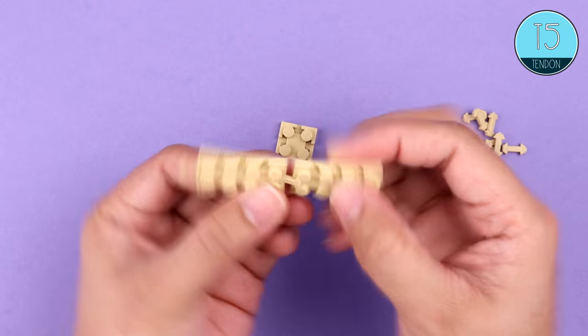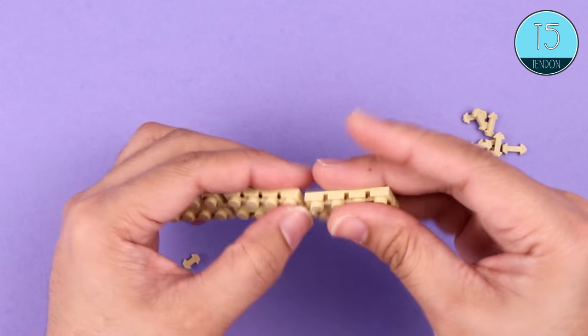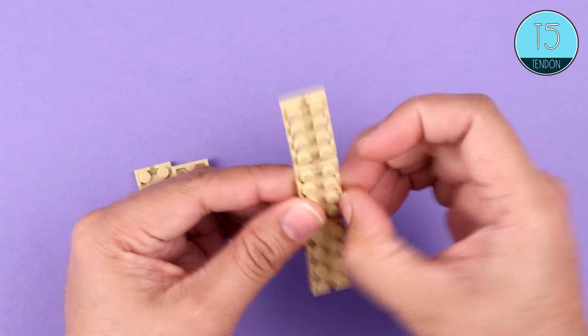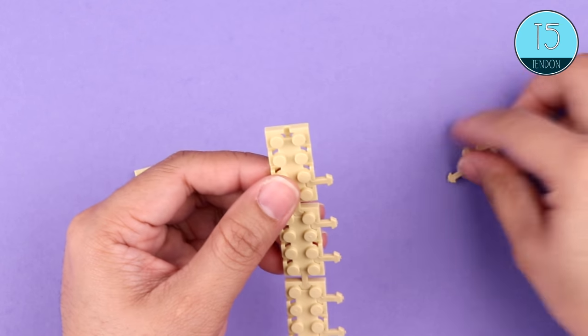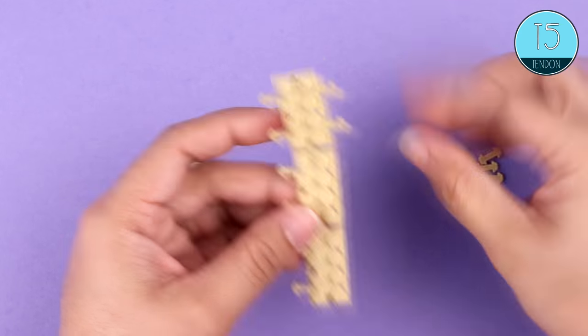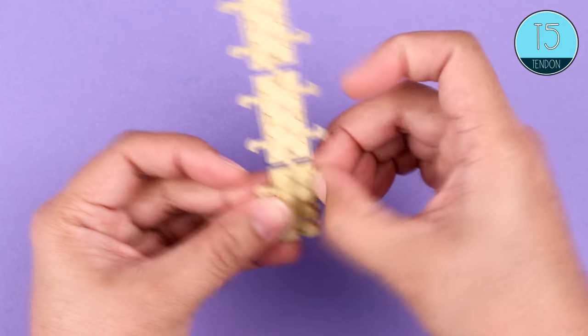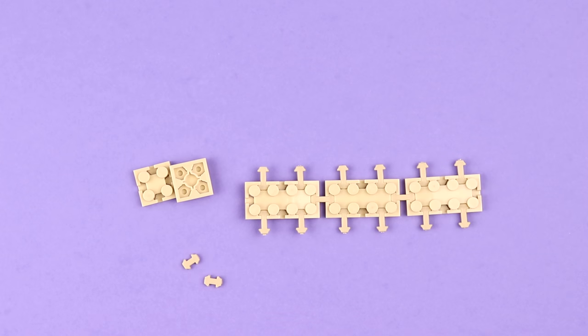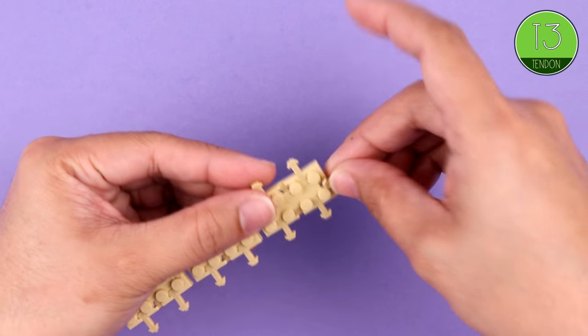We'll begin by making the base for our cake. Follow along with us here as we join these three rectangle bricks with T5 tendons. Now we add one square at each end, connected by a T3.